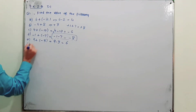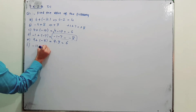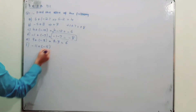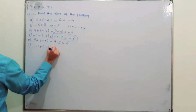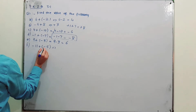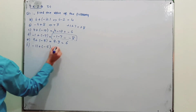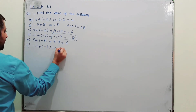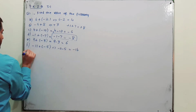Part F: minus 11 plus (minus 5). When you open the brackets, the minus overcomes the plus — it becomes minus 11 minus 5, which equals minus 16.